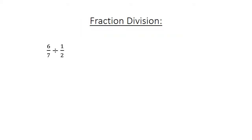Fraction division: 6 over 7 divided by 1 over 2 equals 6 over 7 times 2 over 1, equals 12 over 7, equals 1 and 5 over 7.